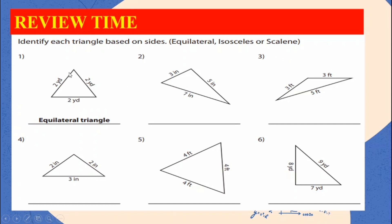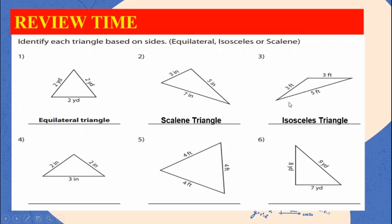Example number one: it is equilateral because all sides are congruent. For number two, the answer is scalene, because all sides are not congruent. And for number three, the answer is isosceles, because two sides are congruent.